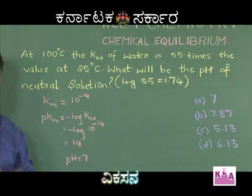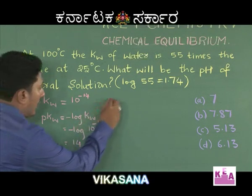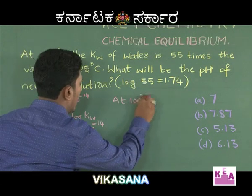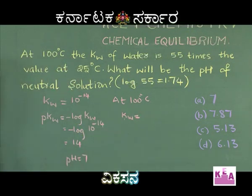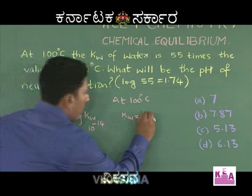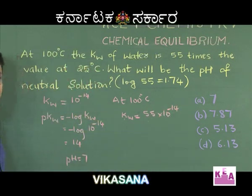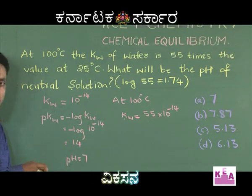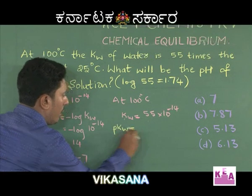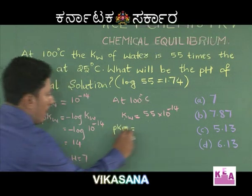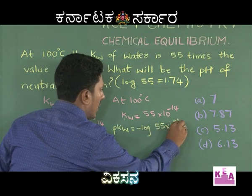Hence at 100 degrees Celsius, the Kw of water is 55 times the value at 25 degrees Celsius. So at 100 degrees Celsius, Kw = 55 × 10⁻¹⁴. To find pKw, we calculate: pKw = −log(55 × 10⁻¹⁴).